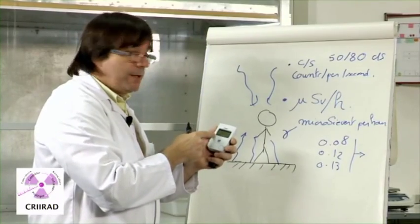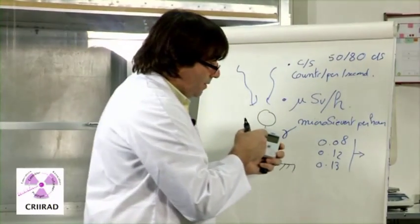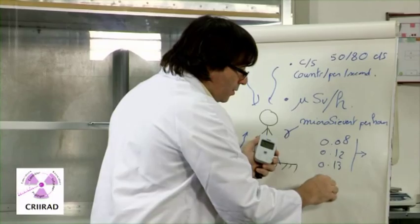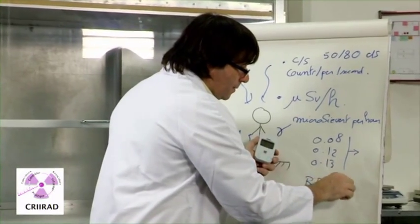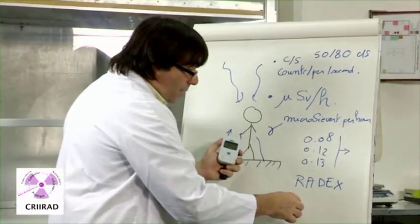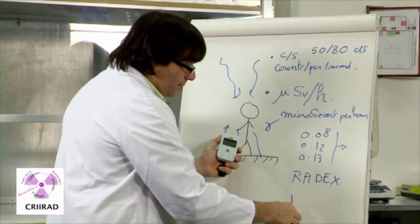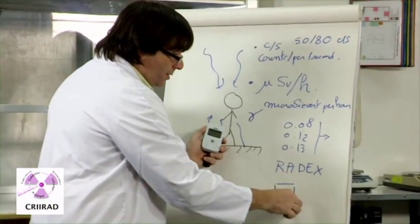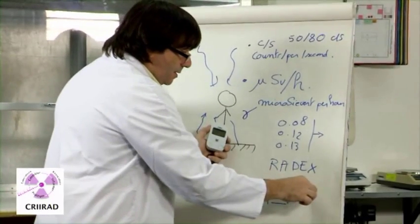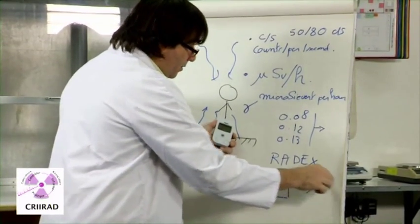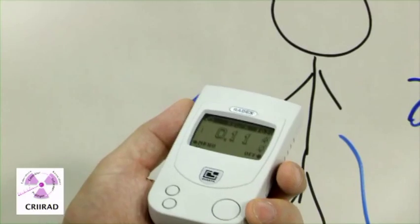So, the way it works is that this device, called RAID-X, it will make a first evaluation, second, third, and fourth, and it will give us the mean value in a few minutes.